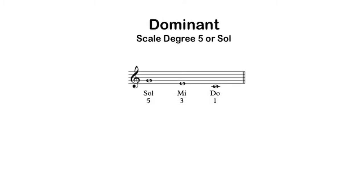The next scale degree pattern is for the dominant, or scale degree 5. Scale degree 5 has a reasonable amount of energy in it, in that it wants to get back to tonic, generally by moving through the tonic triad: five, three, one — or sol, mi, do.